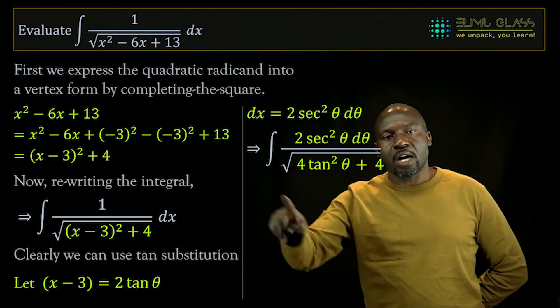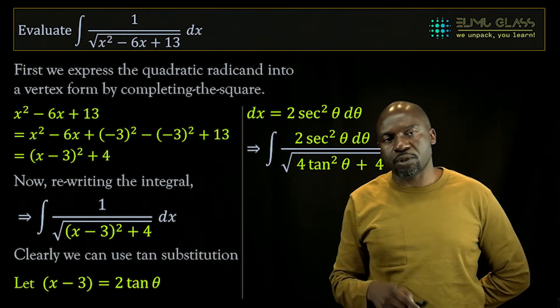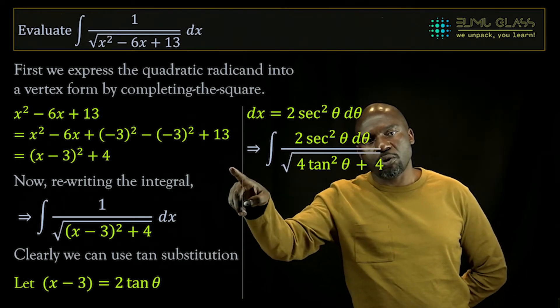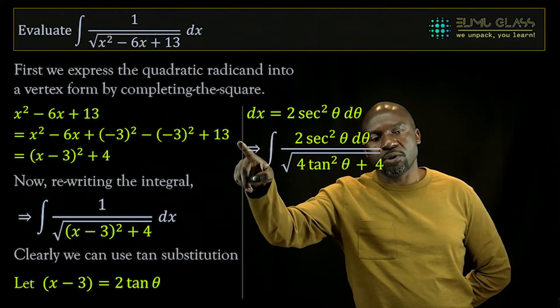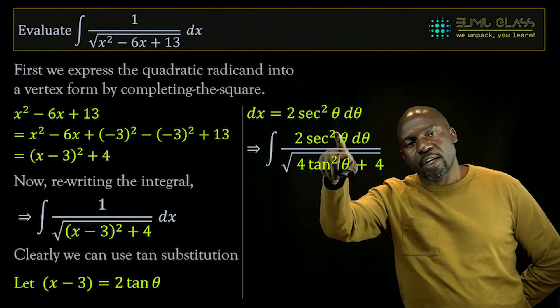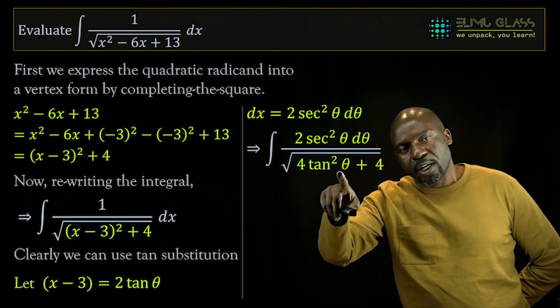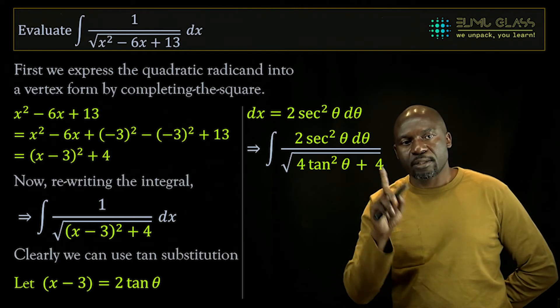If I factorize the 4 out, it becomes 2. If I take it out of the square root sign, it becomes a 2, which goes out there, and this 2 also goes out there, and the 2 cancel, and I end up with sec squared theta at the top, and tan squared theta plus 1 is sec squared of theta.